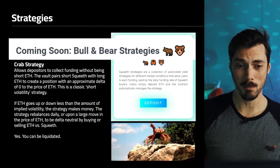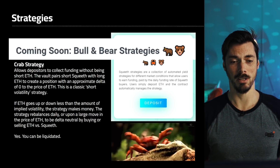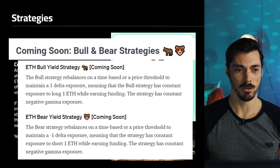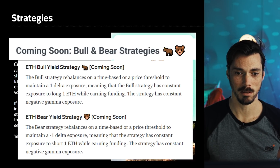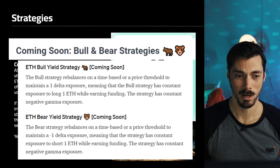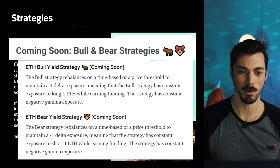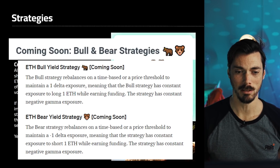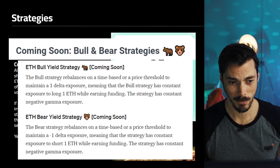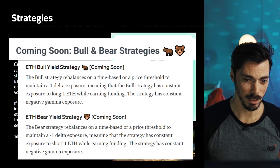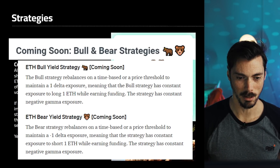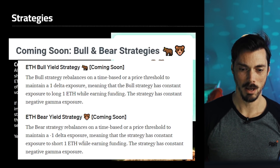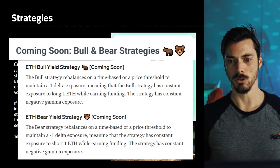Coming soon there will be bull and bear strategies. The bull strategy will rebalance on a time-based or price threshold to maintain a one delta exposure, meaning you have a constant exposure to long one ETH while still earning funding. The bear yield strategy will do the exact opposite — maintain a minus one delta exposure during all of that.